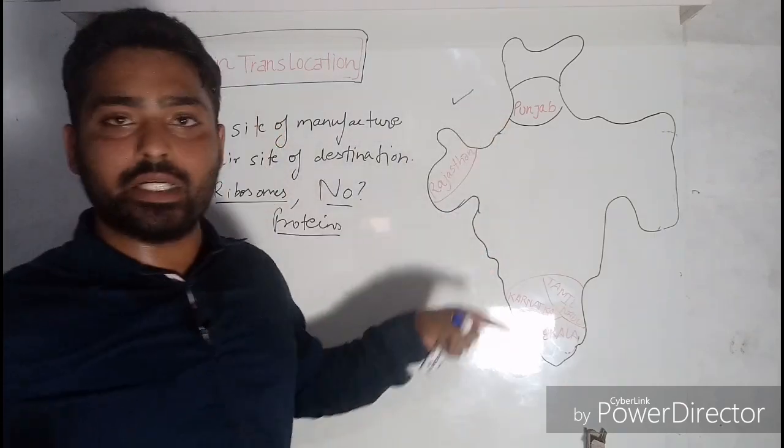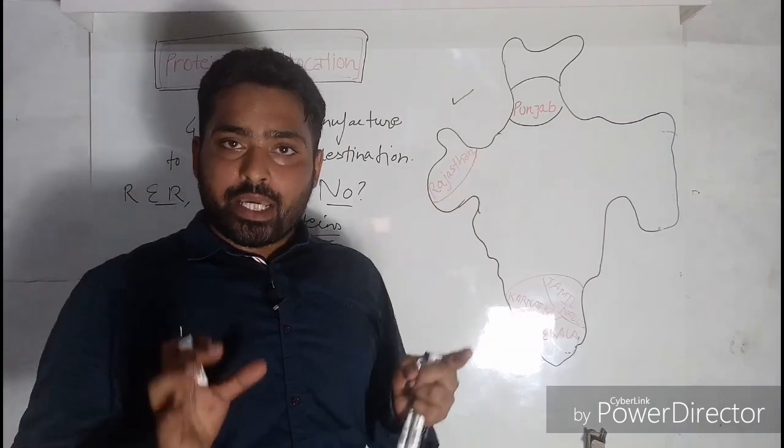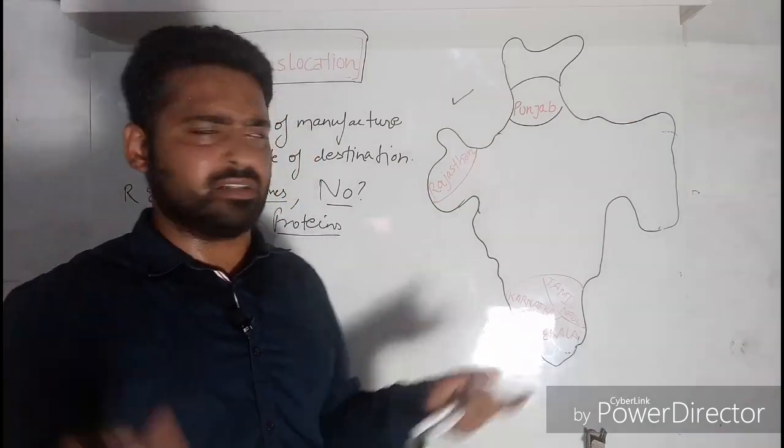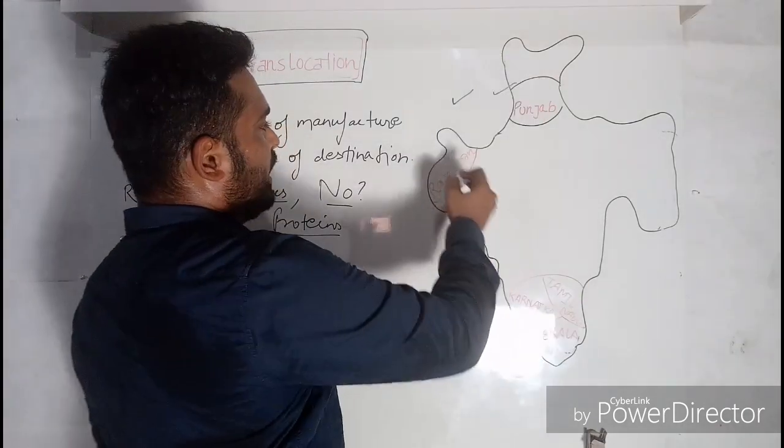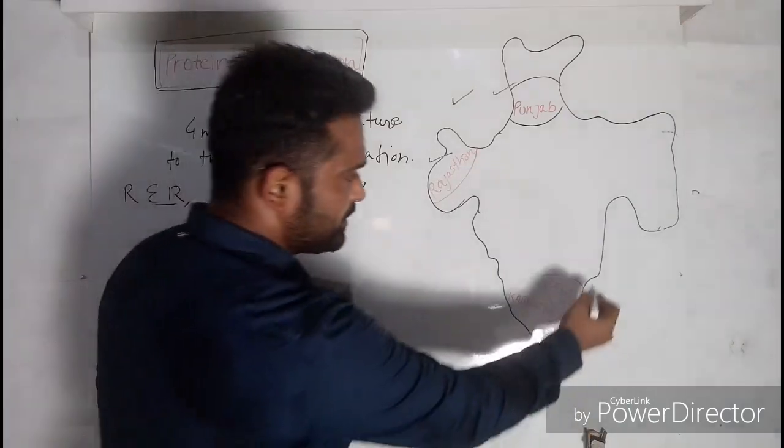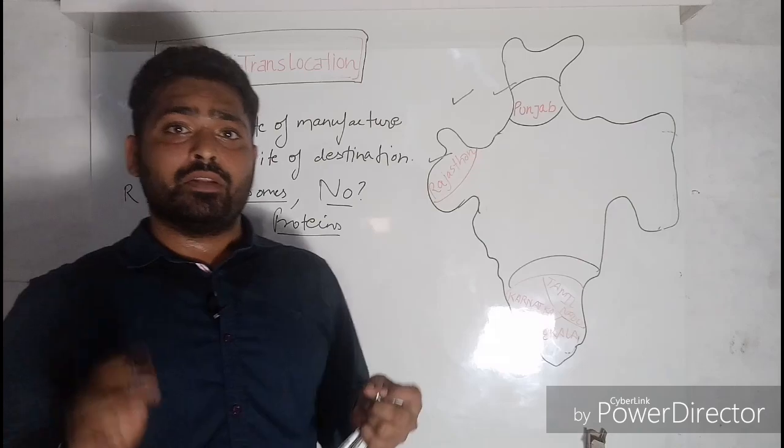To understand this, let's have a look on this map. This is the Indian map drawn on this board. We know India is divided into states. There are 29 to 30 states. Here is Punjab in the north, and we have in the west of India the Rajasthan, then we have in the south of India Karnataka, Tamil Nadu, and Kerala.